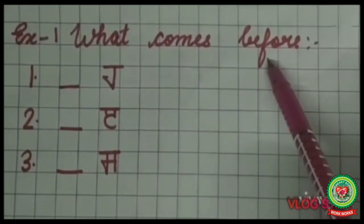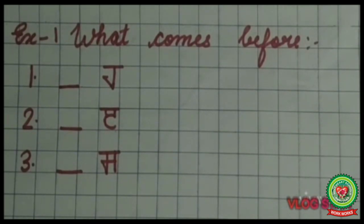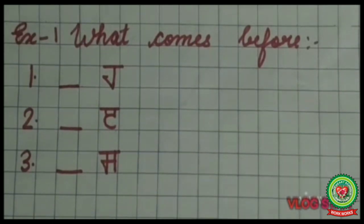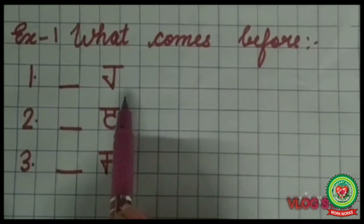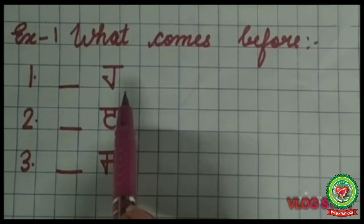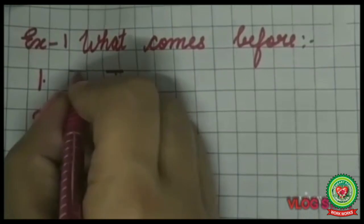The first exercise is 'what comes before'. Let us recall — we have done Ura, Aira, Iri, Sassa, and Haha till now. So tell me, what comes before Haha? The sequence is Ura, Aira, Iri, Sassa, Haha — so the answer is Sassa. I will write Sassa here.